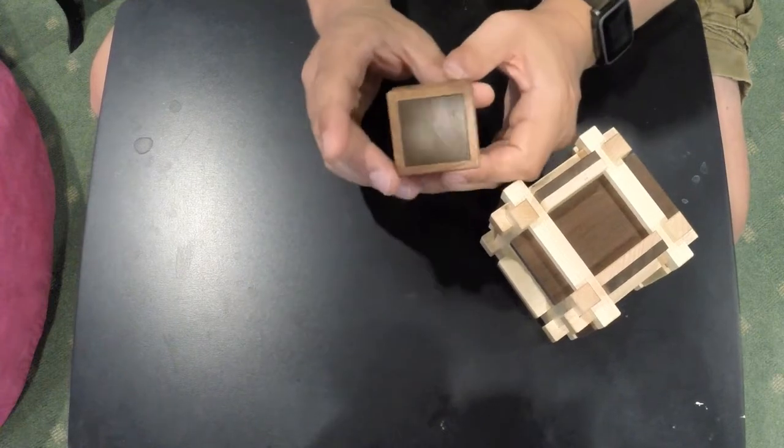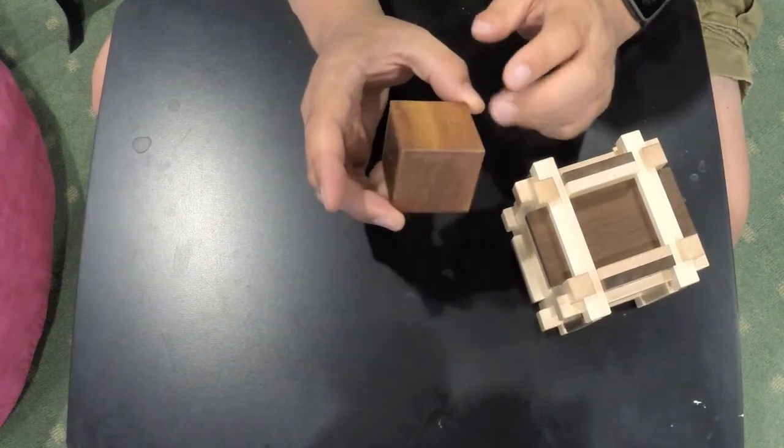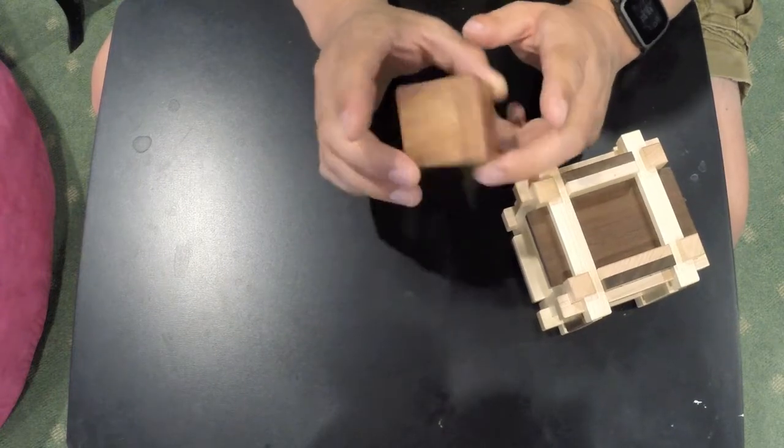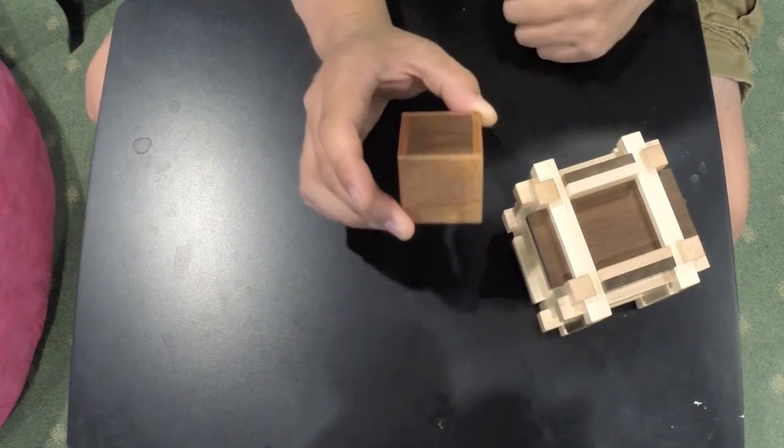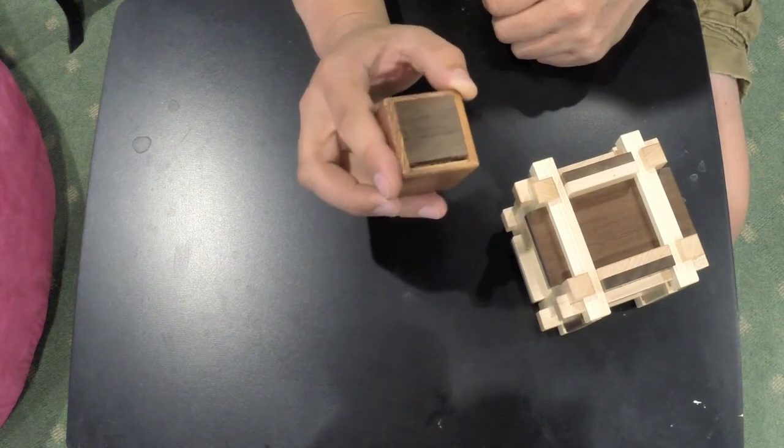So this guy is 1 3/4 inch cubed. It's made from mahogany, walnut, and there's padauk on the inside. So hopefully that's going to keep its nice bright orange color.